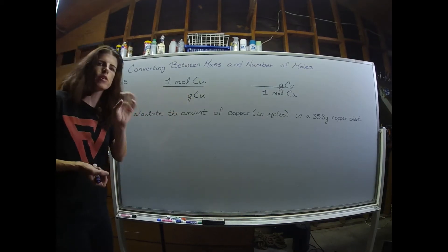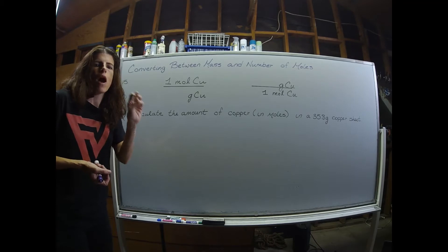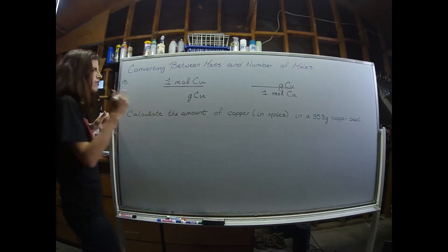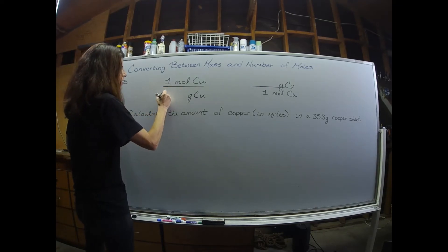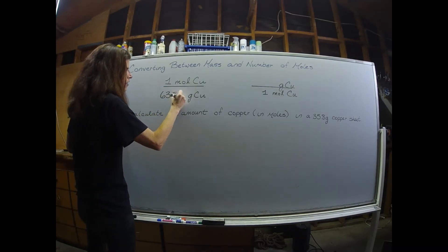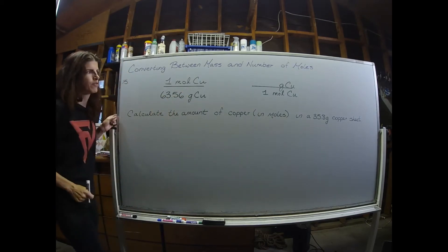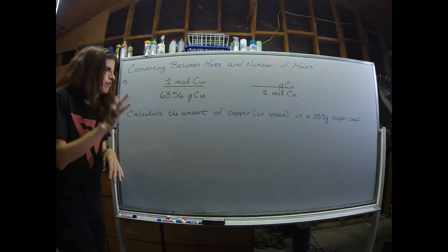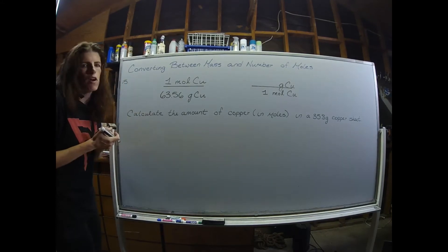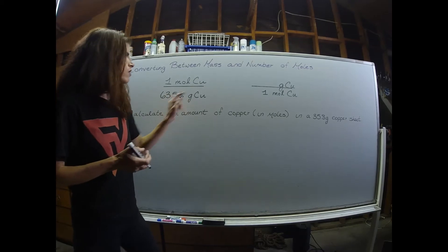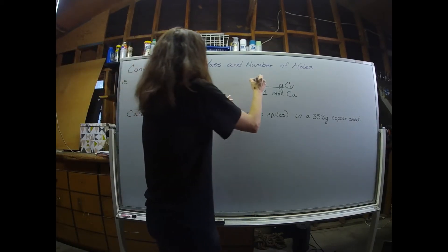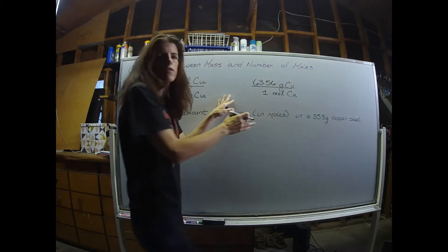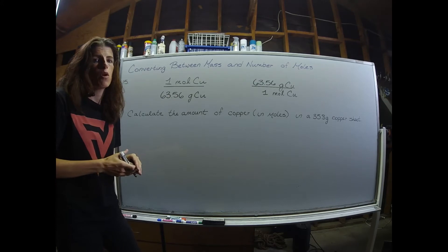One mole of copper — copper is monoatomic, so I don't even need to do any math. I'm just going to grab the atomic mass of copper straight off the periodic table. So I'm going to put 63.56 grams of copper. Remember, these mass-to-mole conversion factors can be flipped just like all our other conversion factors. So I'm going to put 63.56 in the numerator along with grams of copper, divided by one mole of copper.